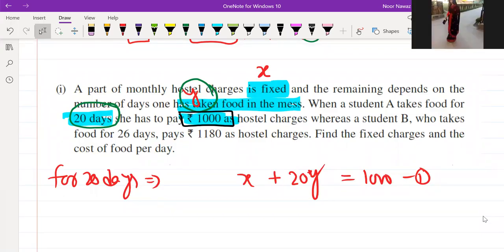10 per day food charges equals to 30 and 15. What do you say to yourself? Who takes food for 26 days?